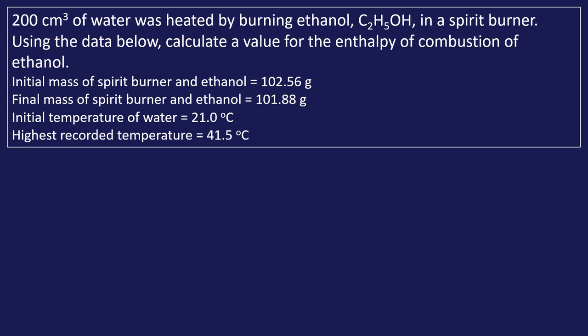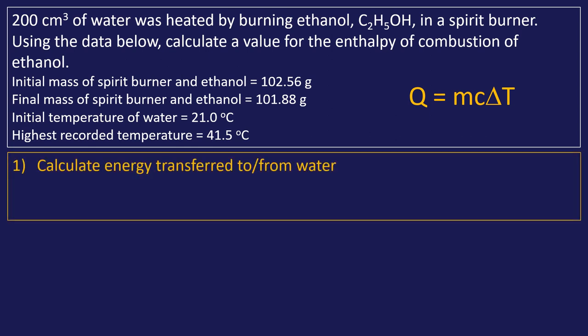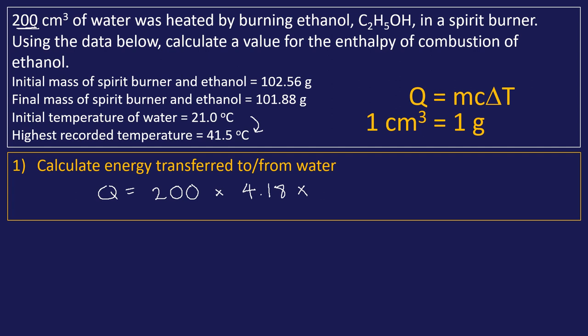Here's an example using an ethanol spirit burner to determine the enthalpy of combustion of ethanol. We use the same two stages — theory and calculation are identical. First, work out the energy transferred to the water. Q = mcΔT. The mass of water is 200 g (since 1 cm³ = 1 g). Specific heat capacity is 4.18. ΔT = 41.5 − 21.0 = 20.5 K. So Q = 200 × 4.18 × 20.5.